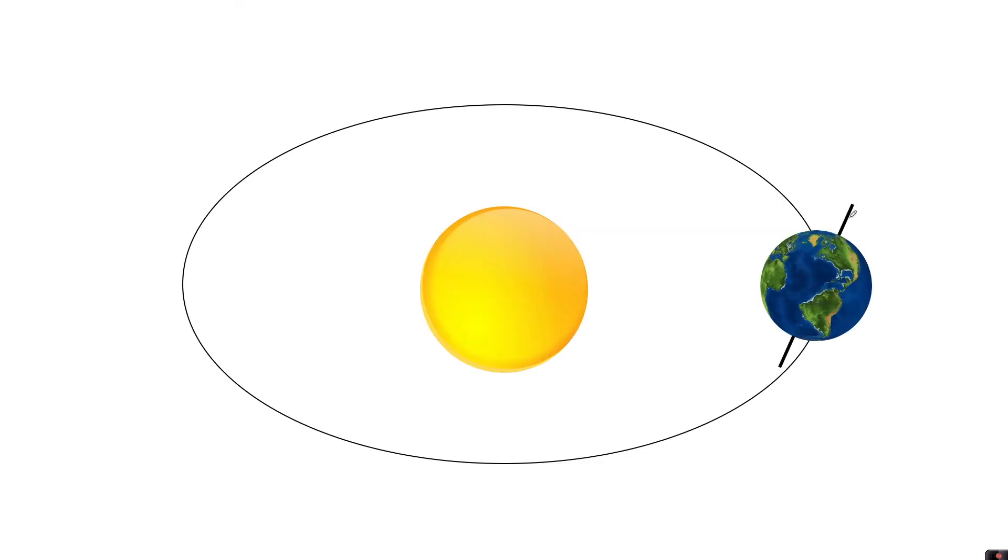When the earth is in this position of its orbit, or over here on the other side, it is furthest away from the Sun. Due to the earth's tilt, you will see the north is tilted away from the Sun and the south region is tilted towards the Sun. In this position we would experience winter in the north and summer in the south.